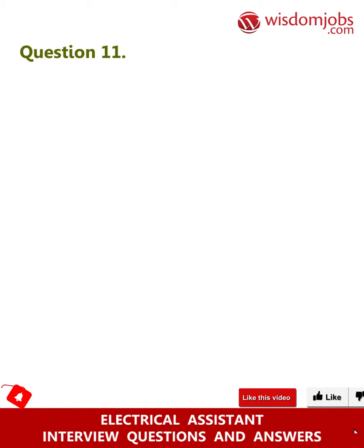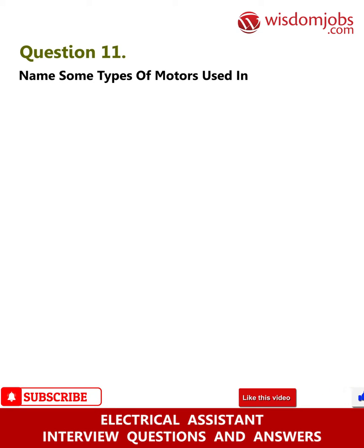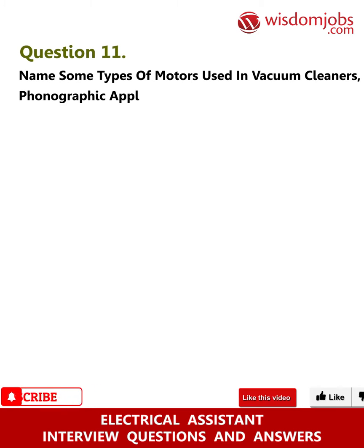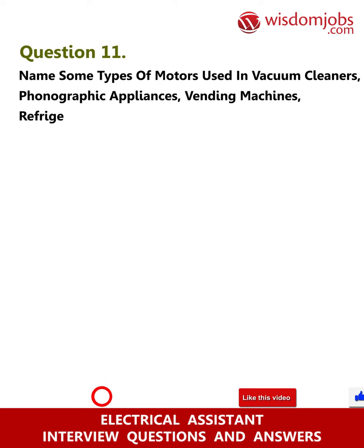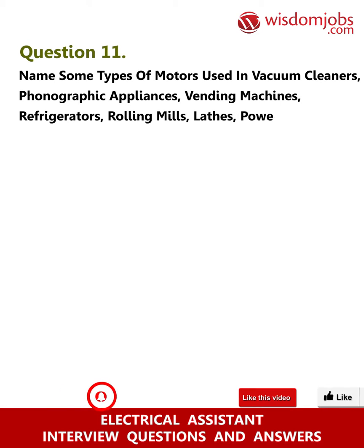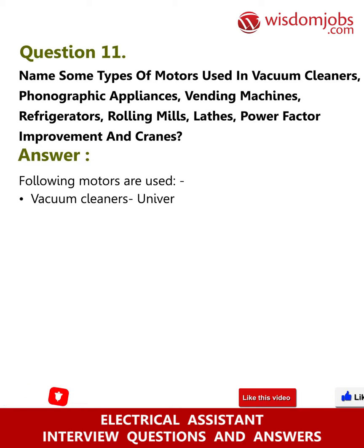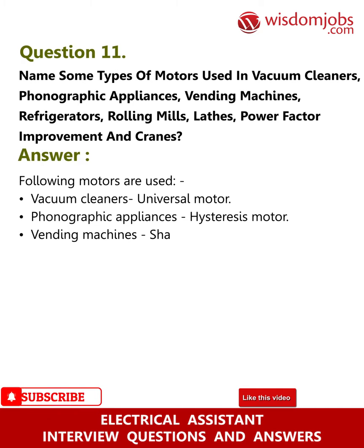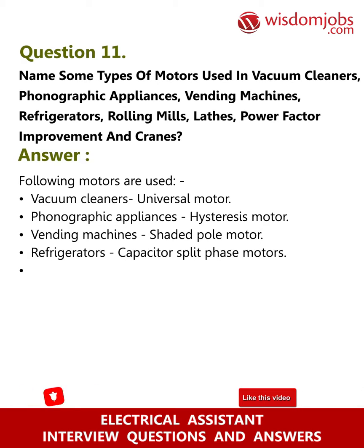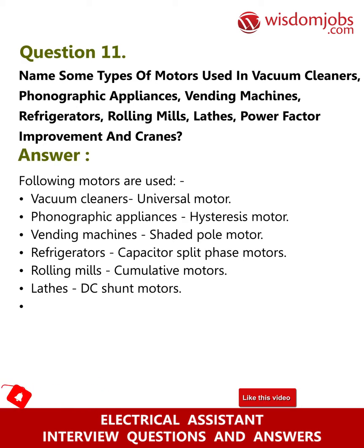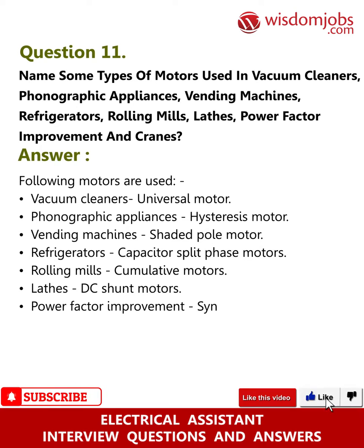Question 11: Name some types of motors used in vacuum cleaners, phonographic appliances, vending machines, refrigerators, rolling mills, lathes, power factor improvement, and cranes. Answer: The following motors are used — vacuum cleaners: universal motor; phonographic appliances: hysteresis motor; vending machines: shaded pole motor; refrigerators: capacitor split-phase motors; rolling mills: cumulative motors; lathes: DC shunt motors; power factor improvement: synchronous motors.